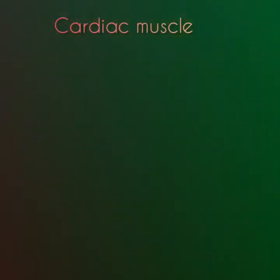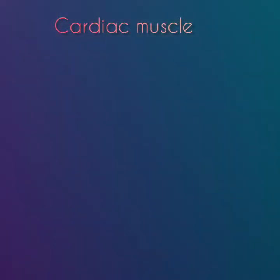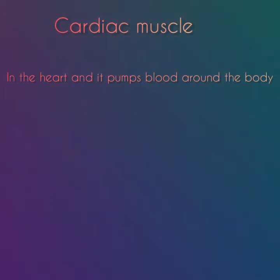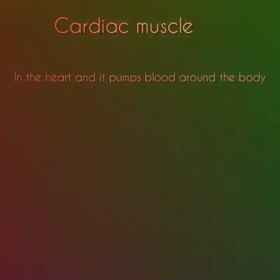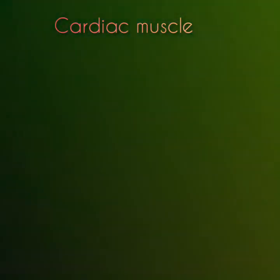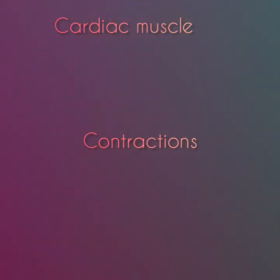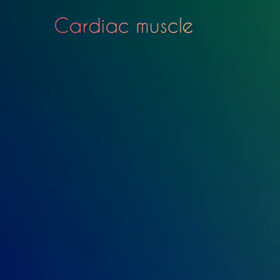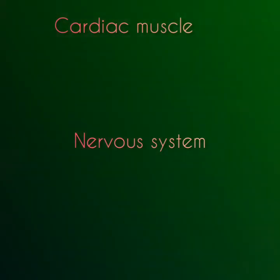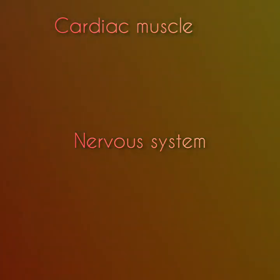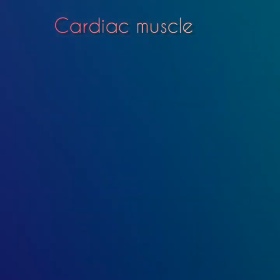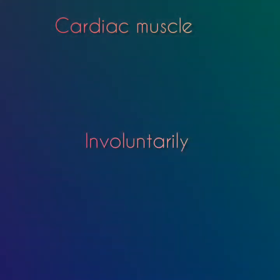Cardiac muscle is located in the heart and pumps blood around the body. The cardiac muscle stimulates its own contractions that form our heartbeat, while signals from the nervous system control the rate of contractions. This type of muscle is strong and acts involuntarily.